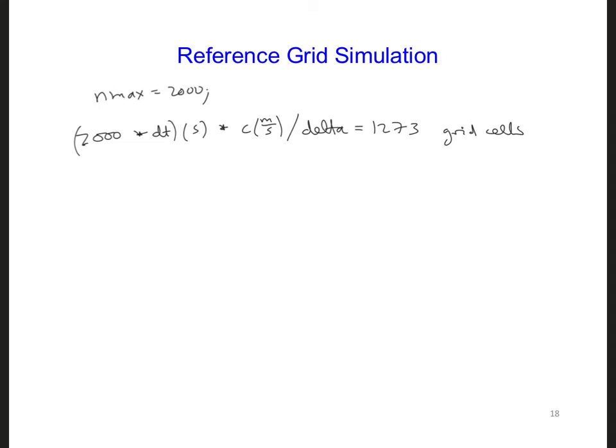So the wave will propagate at the speed of light 1,273 grid cells in 2,000 time steps. Since we already have 140 grid cells between the transmitter and the observation point, we're left with needing 1,133 cells, because 1,273 minus 140 equals 1,133 cells to the length of our grid to limit any reflections from the right side.